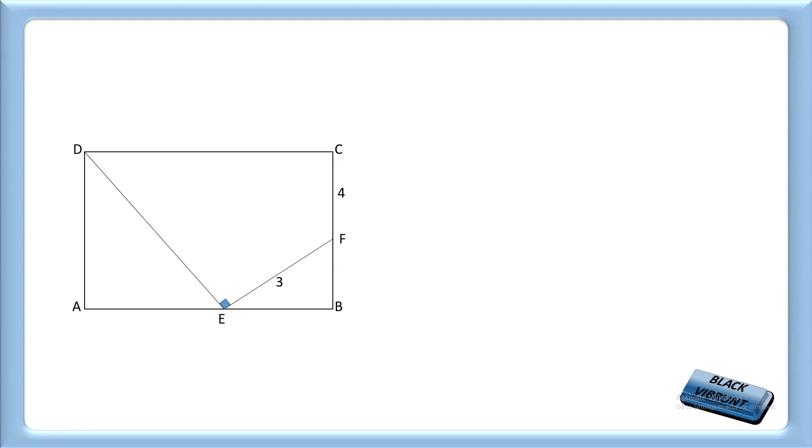Hello mathematicians, let's start with a beautiful geometry problem. We have rectangle ABCD where EF equals 3 and CF equals 4. Here, DE is perpendicular to EF. Now draw DF and angle DFE equals 60 degrees.